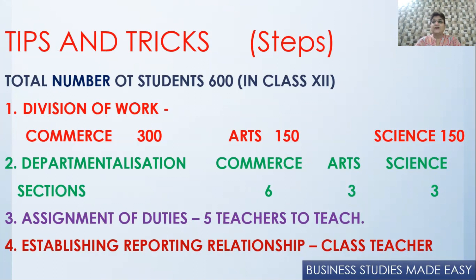Then the third step is assignment of duties. The students attend classes and have a minimum of five subjects. Who is going to teach what? A teacher who can teach business studies can also teach economics or accounts — so what is each teacher going to teach? The teachers are told which subject they have to teach. Similarly, the student who has opted for computers knows they are going to study computers and not maths.